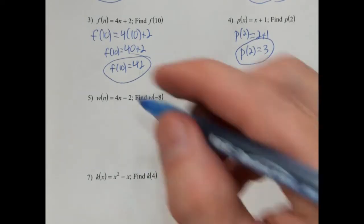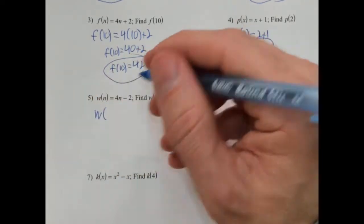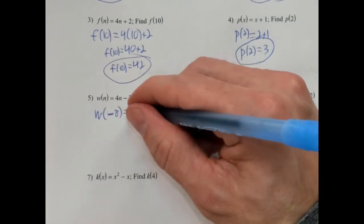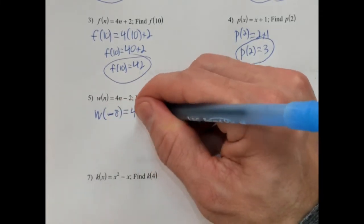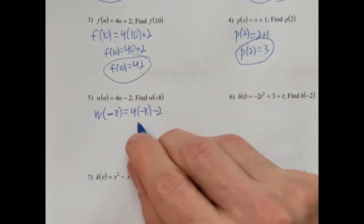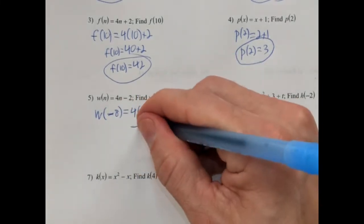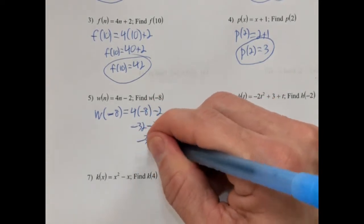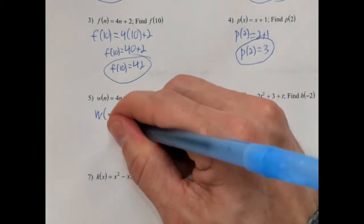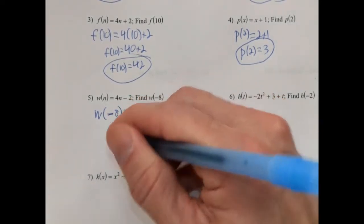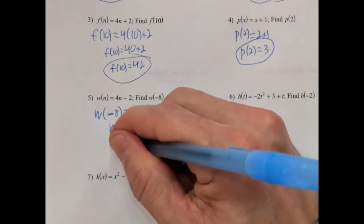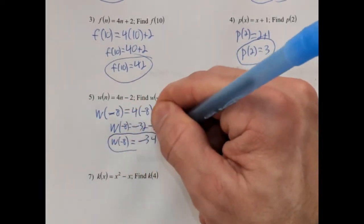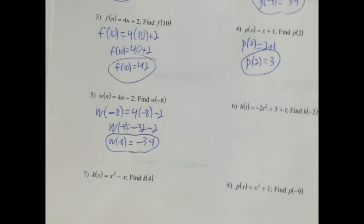w of negative 8: n is going to be replaced by negative 8, so that's 4 times negative 8 minus 2. 4 times negative 8 is negative 32, minus 2 is negative 34. So w of negative 8 equals negative 34. Our input is negative 8, our output is negative 34.